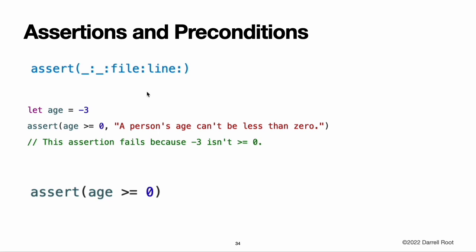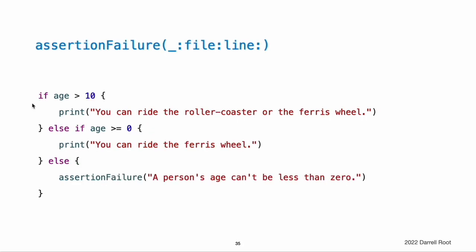Debugging with assertions. You write an assertion by calling the assert(_:_:file:line:) function from the Swift Standard Library. You pass this function an expression that evaluates to true or false and a message to display if the result of the condition is false. In this example, code execution continues if age >= 0 evaluates to true — that is, if the value of age is non-negative. If the value of age is negative, then age >= 0 evaluates to false and the assertion fails, terminating the application. You can omit the assertion message, for example when it would just repeat the condition as prose. If the code already checks the condition, you use the assertionFailure function to indicate that an assertion has failed.